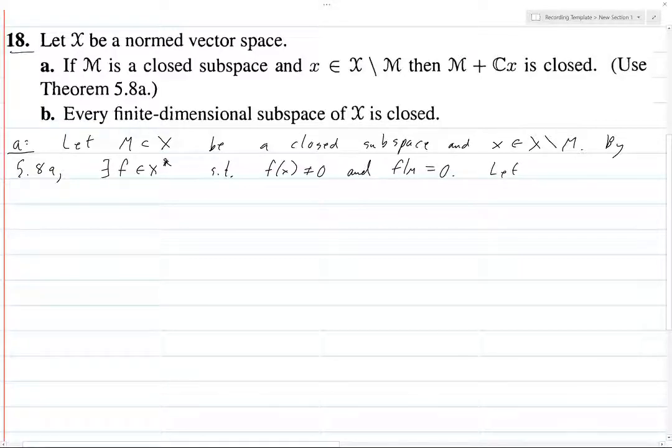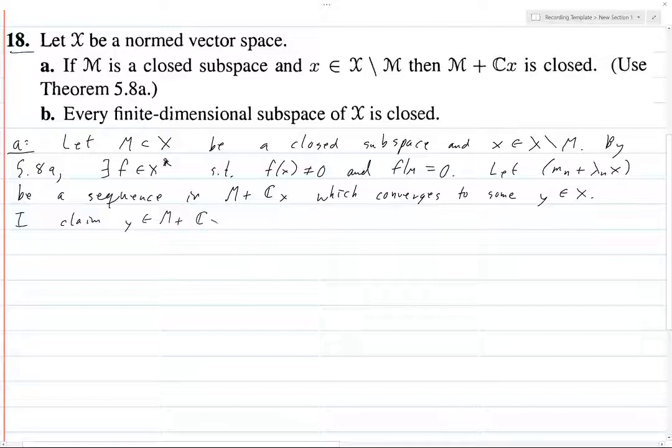So we want to prove that M plus CX is closed. We're going to take a sequence in here which converges and prove that the limit also is contained in there. So let M_N plus λ_N x be a sequence in M plus CX which converges to some element y which, right now, all we know is that it's in X. However, claim that y is in M plus CX.